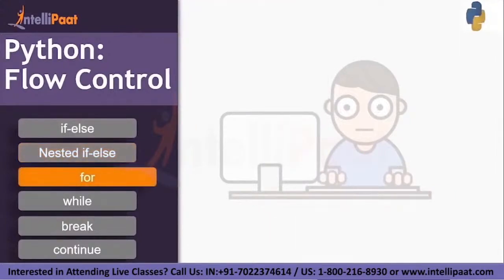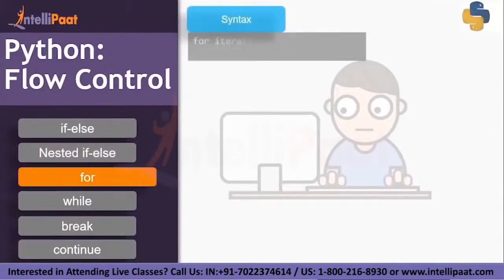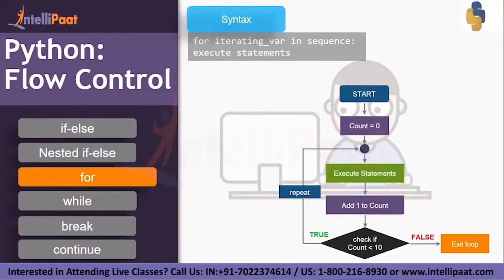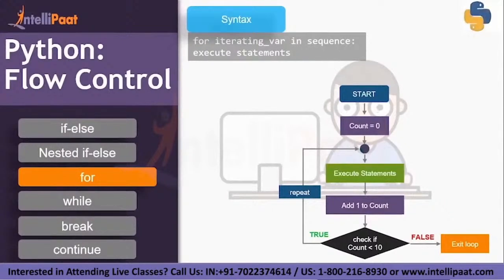Next is the for loop. Let's see the syntax: for iterating variable in sequence, colon, execute statement. For example, start by defining a variable count equal to zero, then execute the statement, increment the value of count by one, and then check the condition if count is less than 10. Is one less than 10? Yes, the condition is true. So repeat — execute the statement again, increment count to two, and check if two is less than ten. Continue this until 10 is less than 10 becomes false and you exit the loop.